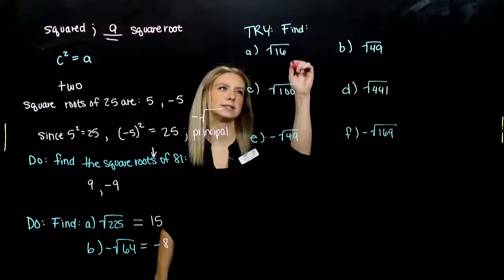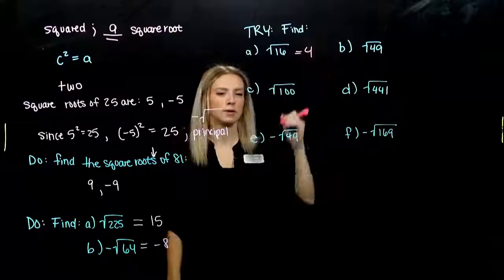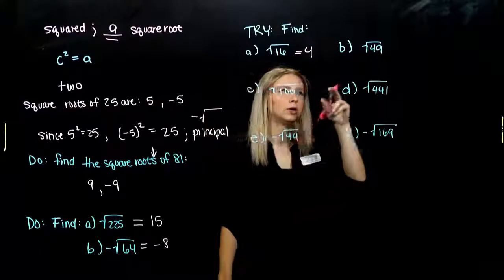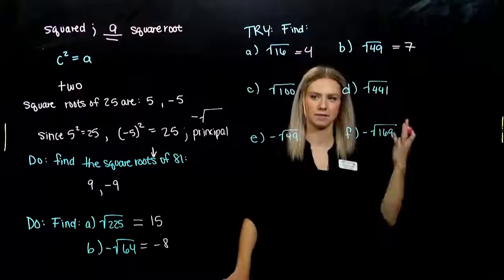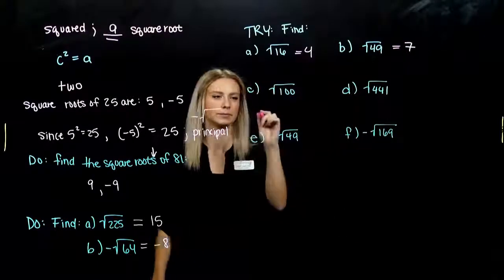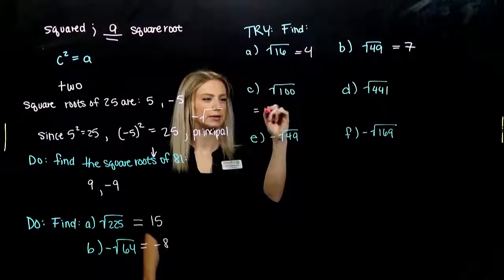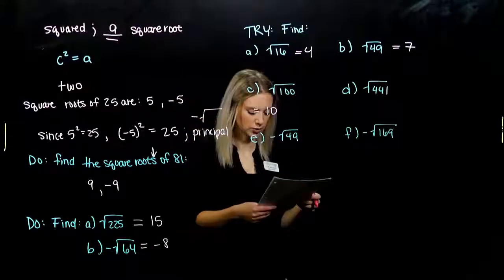So, for part A, what is the square root of 16? 4, we were asking for the principal root. For part B, we're asking for the principal root. 7 times 7 gives us 49. For part C, again, still principal, still positive. 10 times 10 gets us to 100.